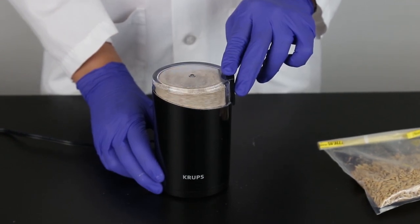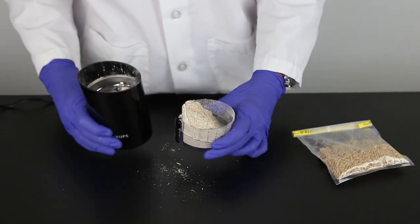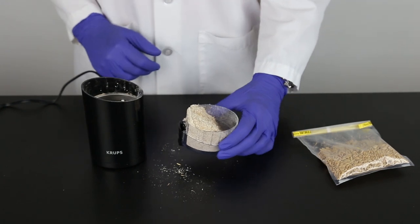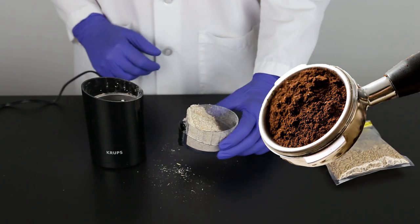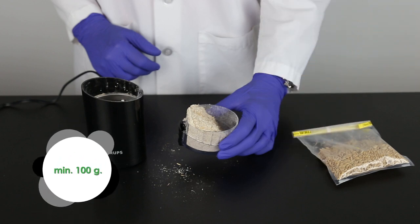Obtain a representative sample and grind so that at least 95% of the ground material passes through a 20 mesh sieve. The particle size should be about the same as espresso. It is best to grind a minimum of 100 grams of your sample.